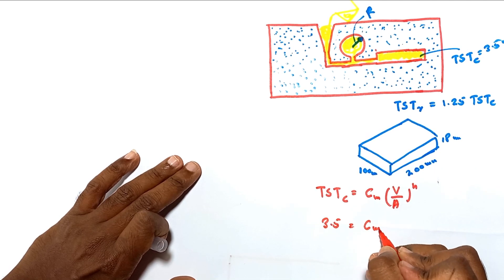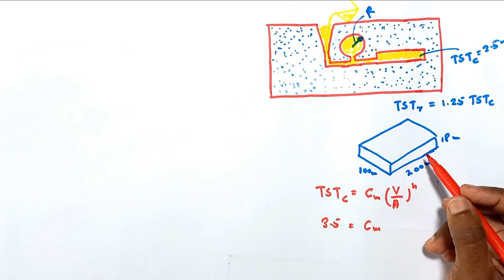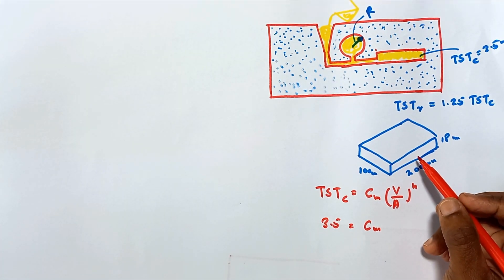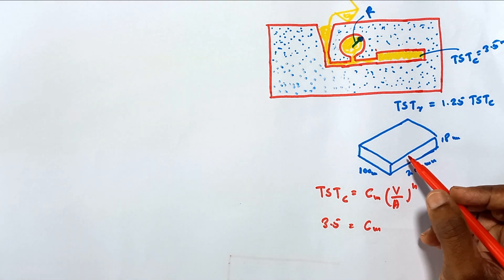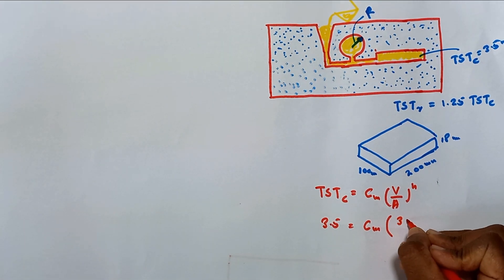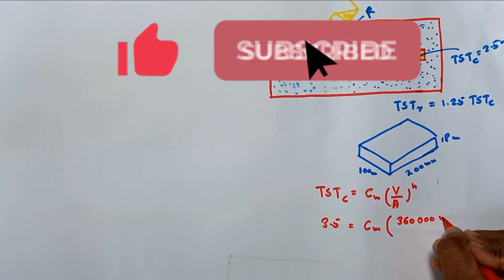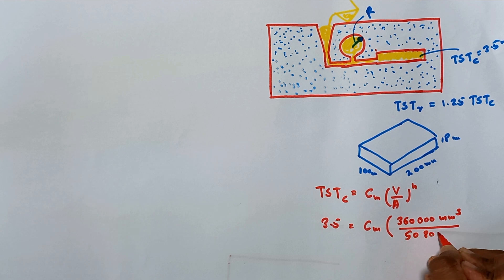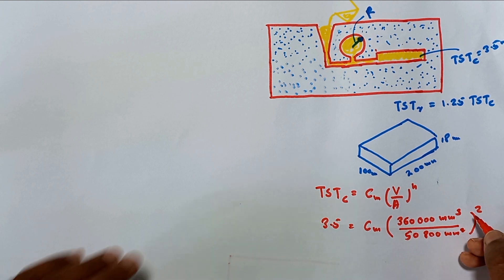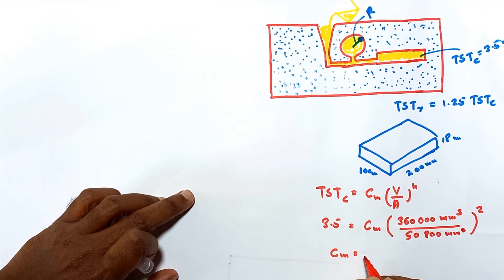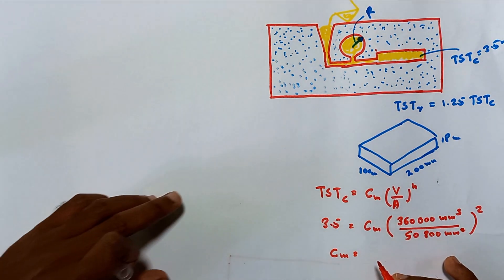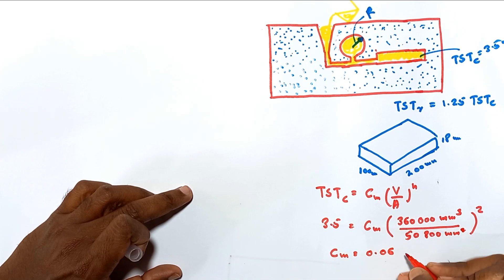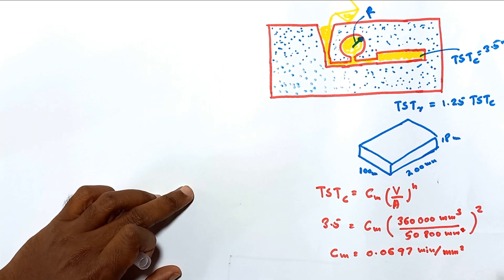The mold constant C_m is what we are going to find. For this rectangular product, the volume can be easily calculated. Substituting the volume in cubic millimeters divided by the surface area in square millimeters squared into the equation, and simplifying, we find the mold constant C_m equals 0.0697 minutes per square millimeter.